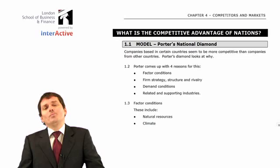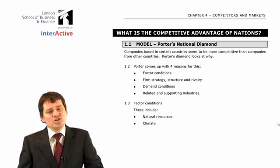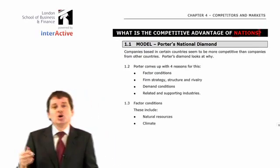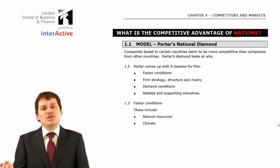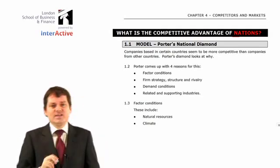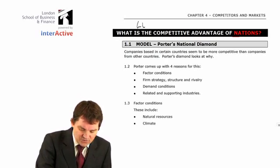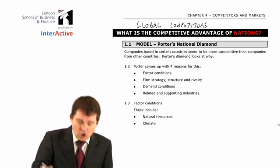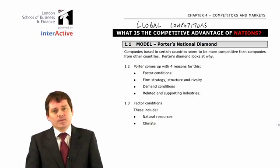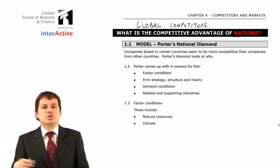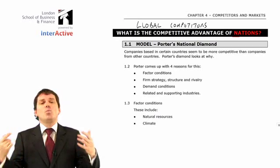The two big models we've got are both by a guy called Michael Porter. The first model is talking about why certain nations, certain countries have advantages. The reason why this is important is because in the last chapter we said you have to worry about global competitors. As a company based in the UK, you need to worry about competitors from Germany, from France, from the US, from India, from China, from wherever.